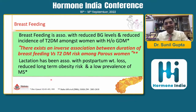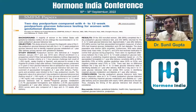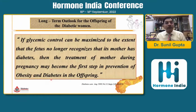Breastfeeding is important. There exists an inverse association between duration of breastfeeding and type 2 diabetes risk; we should encourage breastfeeding so women can prevent metabolic syndrome in adult life. A recent 2022 paper showed that 2 days postpartum OGTT has similar diagnostic value as 4 to 12 weeks postpartum OGTT in predicting impaired glucose metabolism and diabetes at 1 year after delivery. Changing the timing of the glucose tolerance test should be considered to maintain good follow-up of GDM women postpartum.